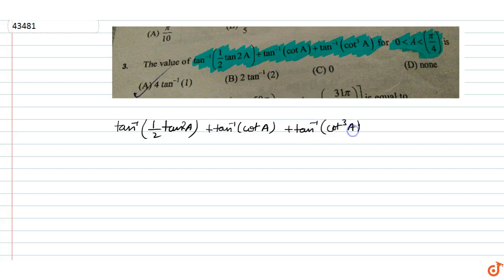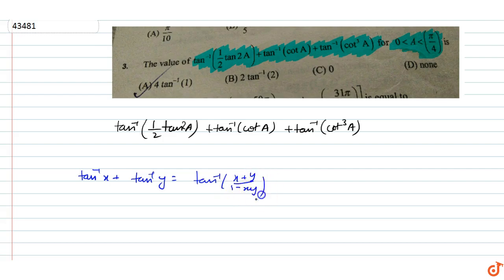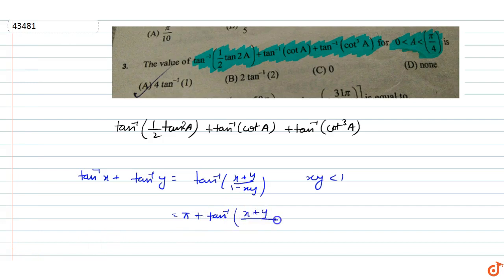We know that tan inverse of x plus tan inverse of y has the formula: tan inverse of (x + y)/(1 - xy) when xy < 1, and pi plus tan inverse of (x + y)/(1 - xy) when xy > 1.